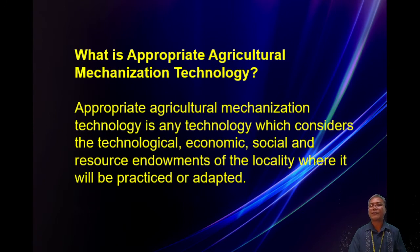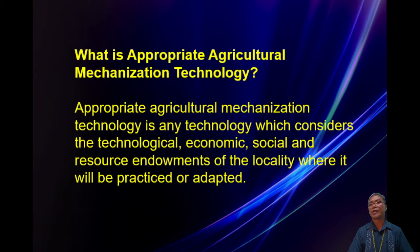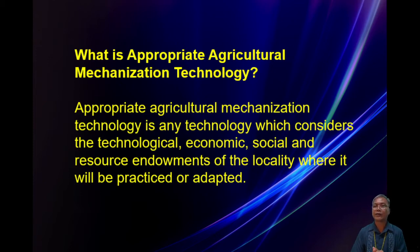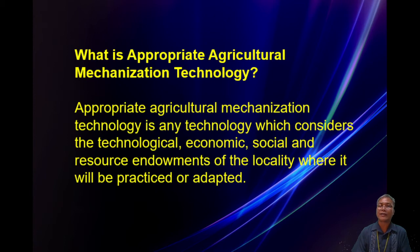So what is appropriate agricultural mechanization technology? Appropriate agricultural mechanization technology is any technology which considers the technological, economic, social, and resource endowments of the locality where it will be practiced or adapted. Technology is considered appropriate when it is adapted in the locality, benefits the community economically and financially, is socially and culturally accepted, and produces income for the community.